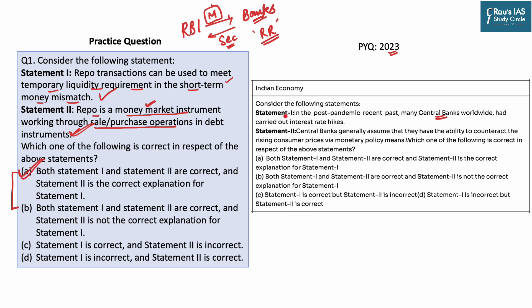The answer to UPSC's 2023 question is option A, where both statements are correct and the explanation given is also correct. To know more about such questions and their answers in the 2023 prelim examination, you can follow the Compass website at RAUS IAS.